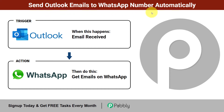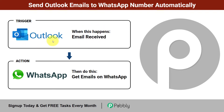How to send Outlook emails to WhatsApp automatically — a very interesting automation where whenever you receive an email in your Outlook account, you get notified about that email on your WhatsApp number, so you do not have to open your Outlook account again and again. We are not going to forward every single email — we will filter out and forward only the important emails on WhatsApp.